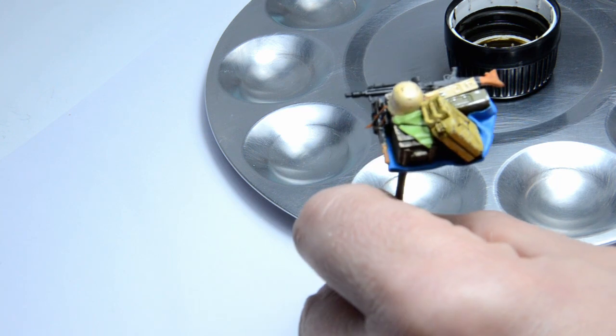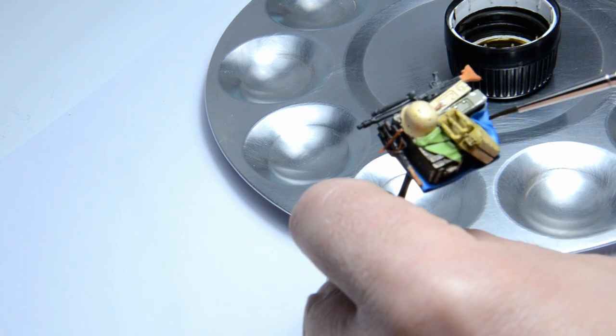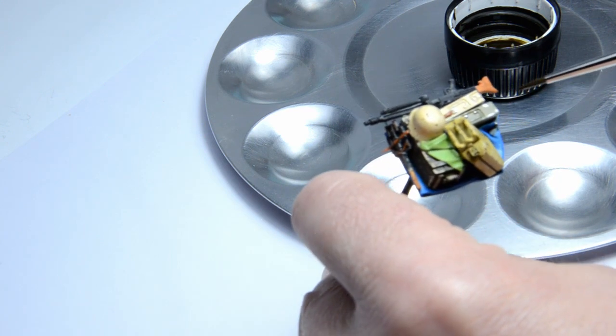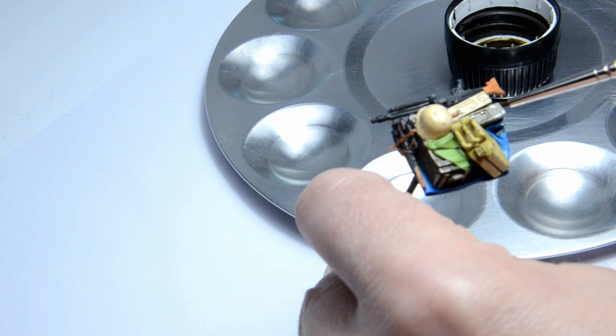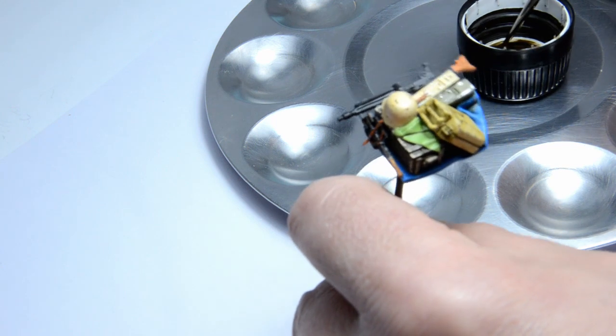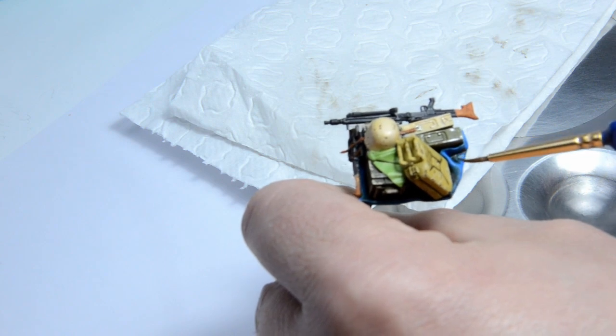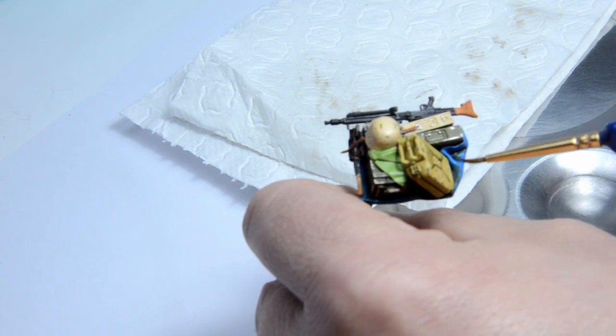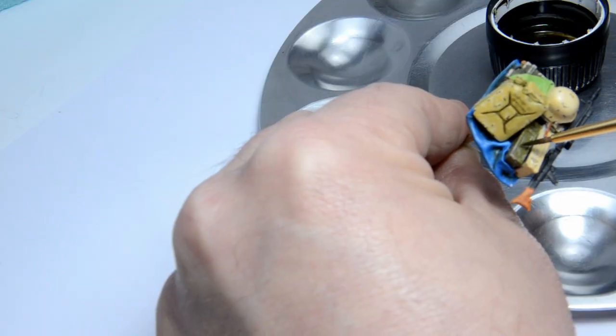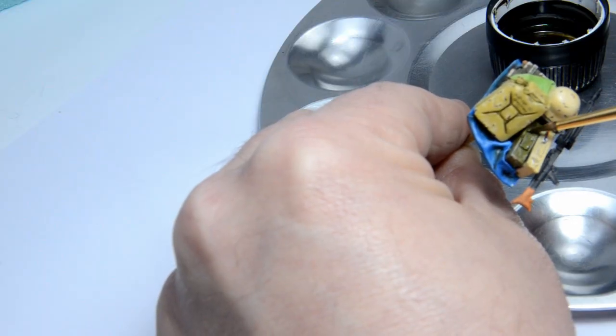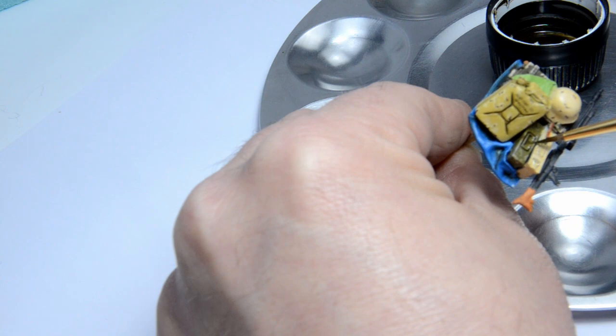The next important step was an enamel wash. I was using AMO brown wash for dark yellow. It was applied from the bottom. After a few minutes of drying, I started to clean away the excess with some AMO odorless thinner. I was trying to obtain some shadows, and I think this is the easiest way.